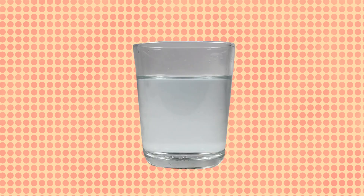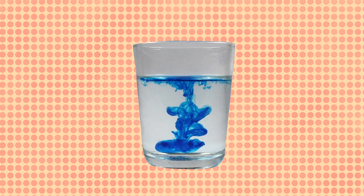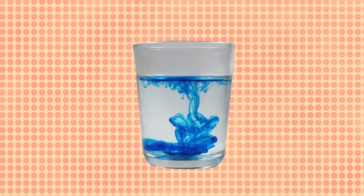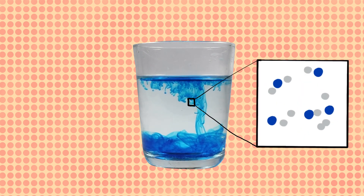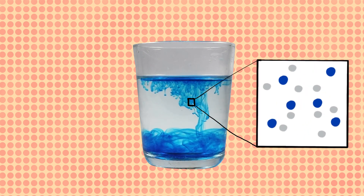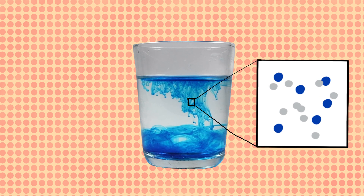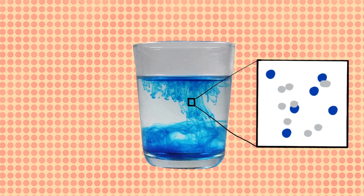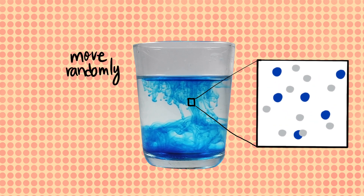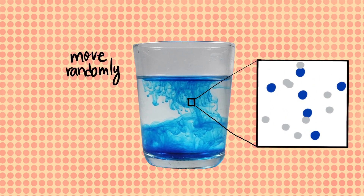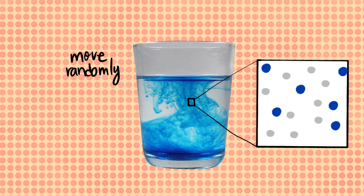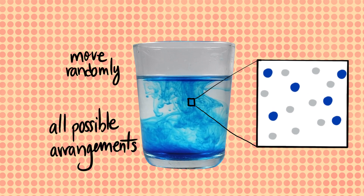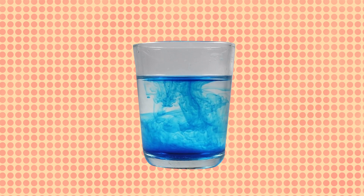Let's look at this ink and water system. Why does it tend to lose order and mix over time? At microscopic scales, particles are always wiggling and bumping against each other. This makes them move randomly and constantly swap positions. So over time, particles explore all possible arrangements in space.